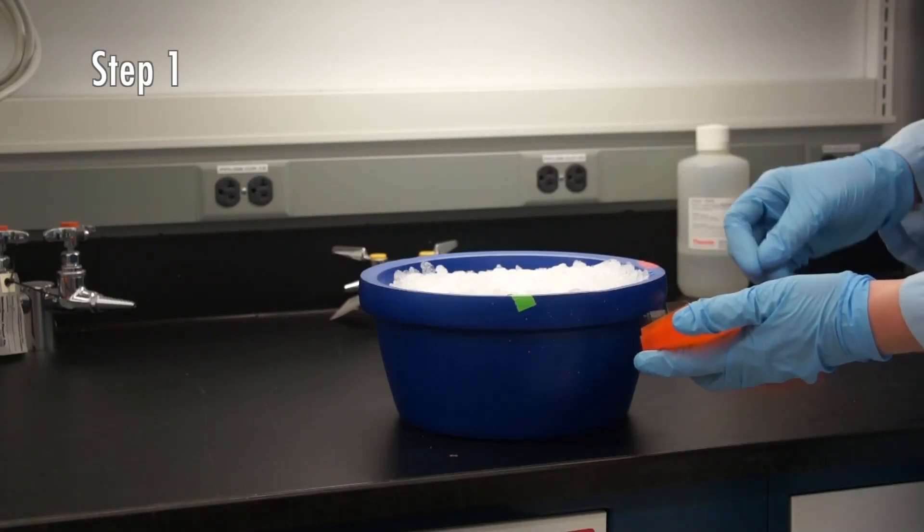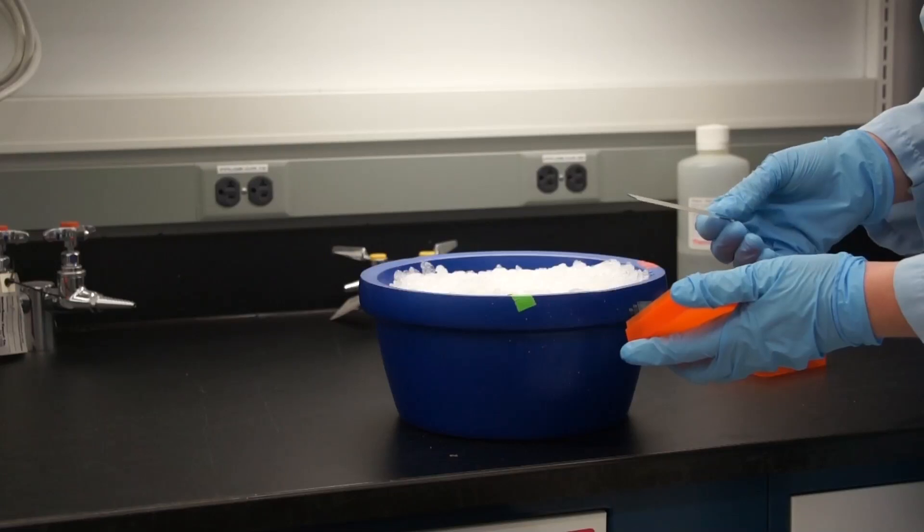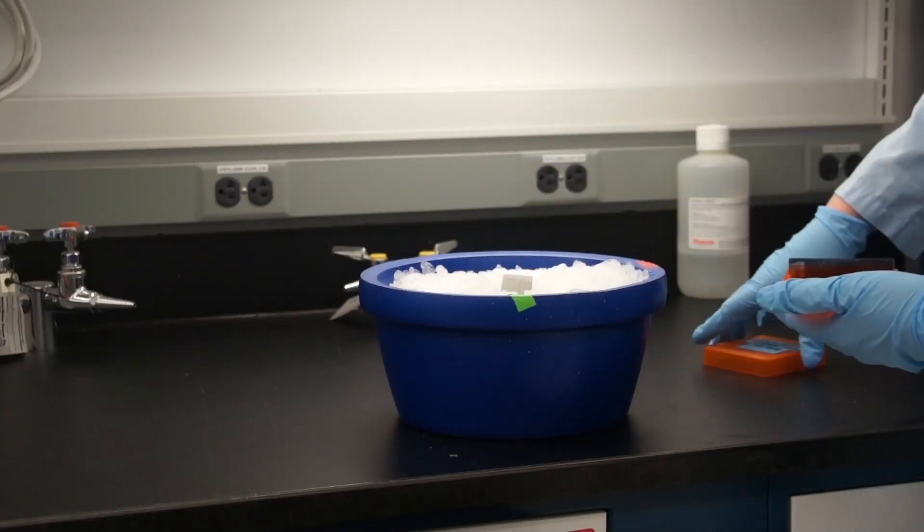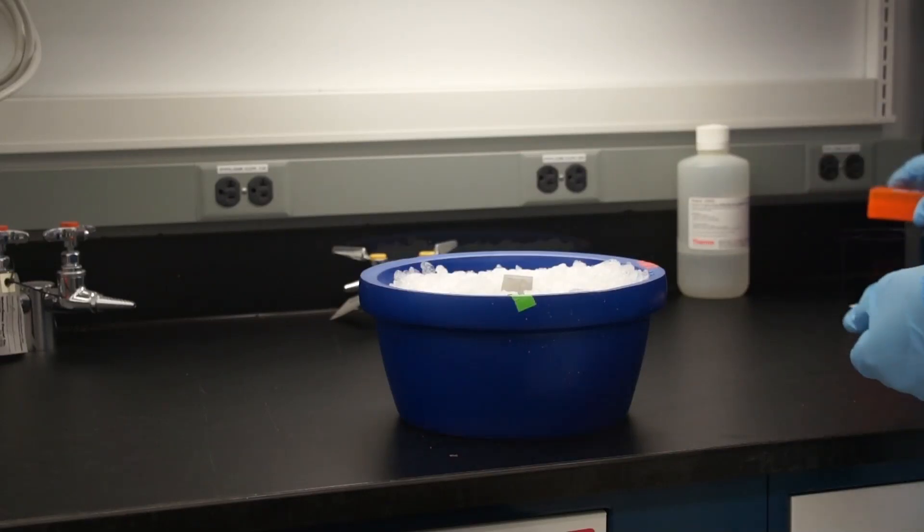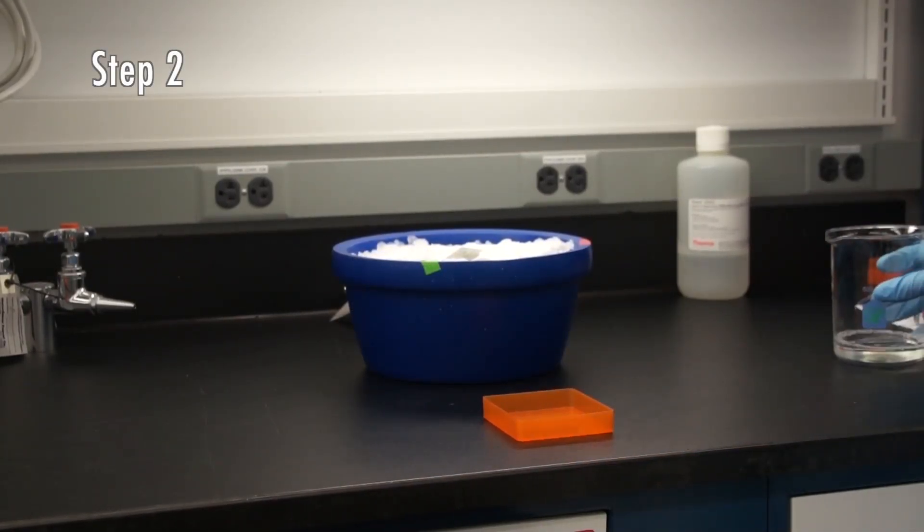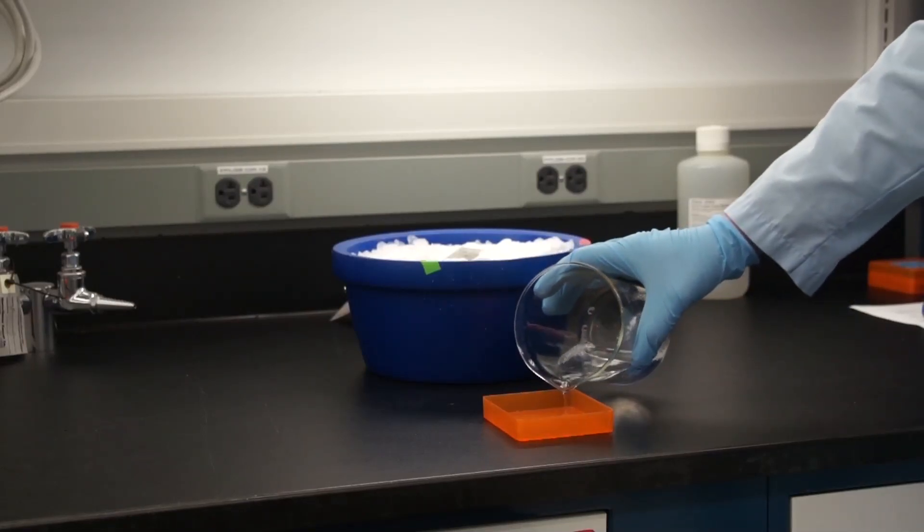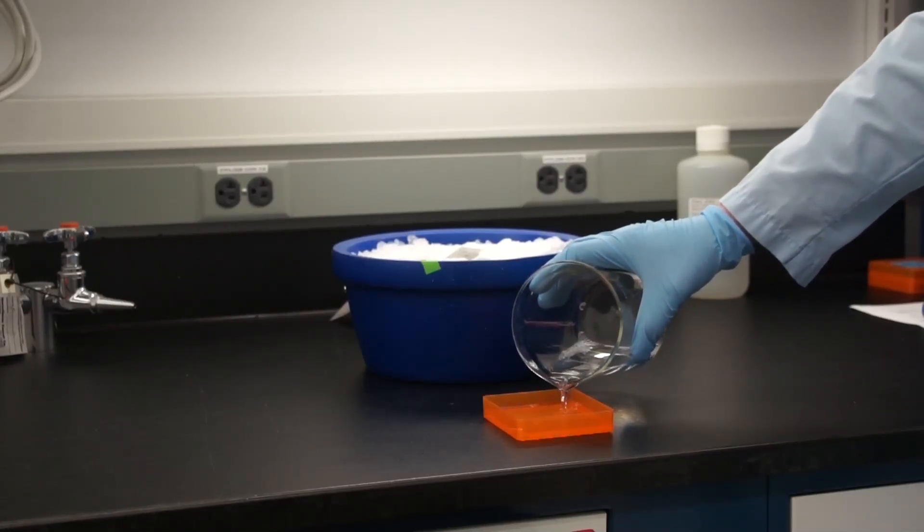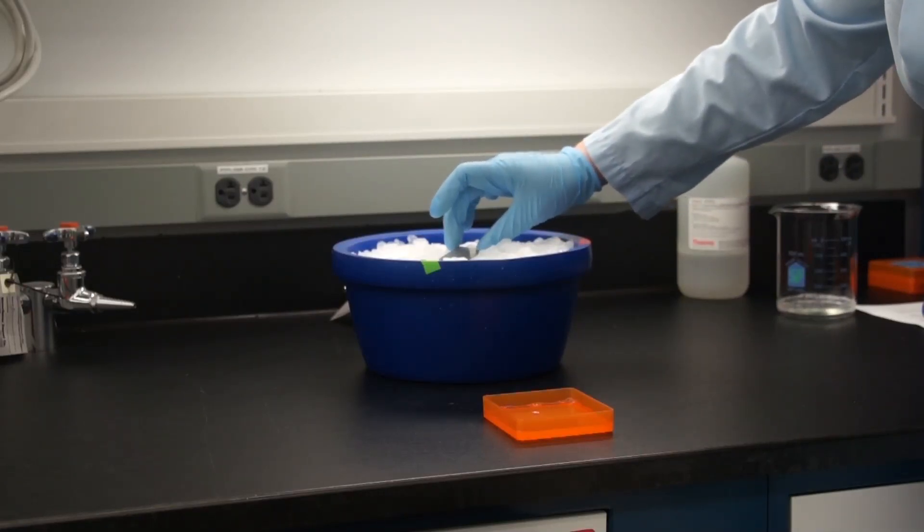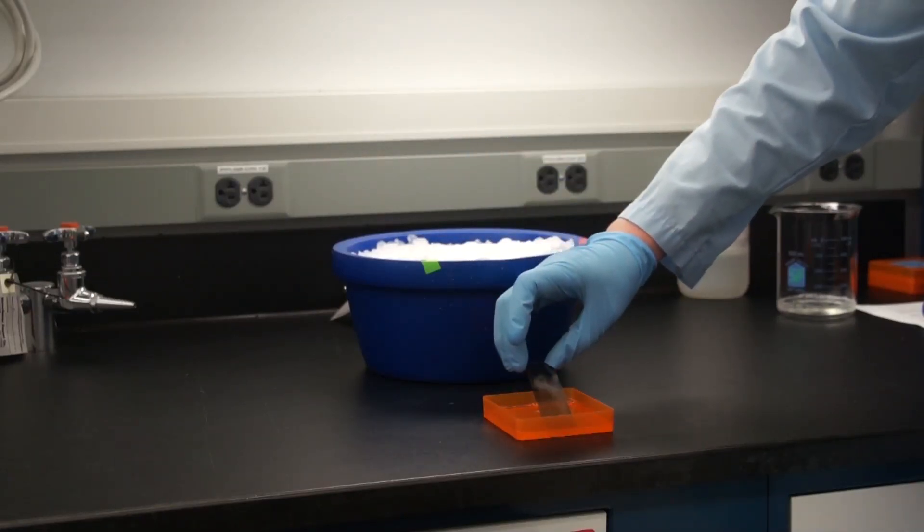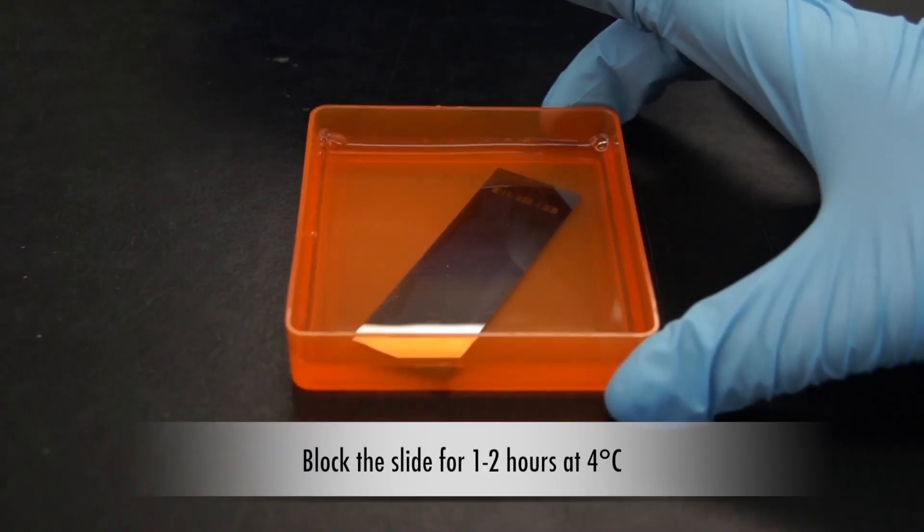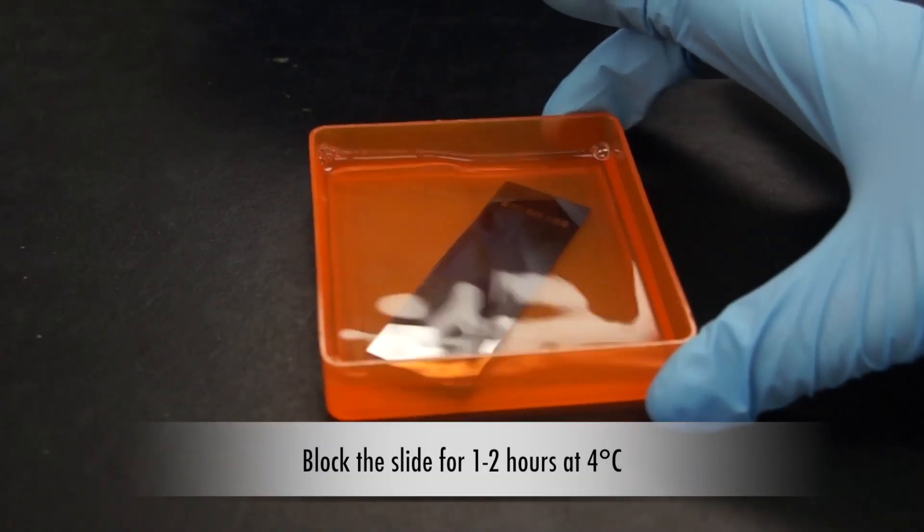We'll start by thawing the protein microarray on ice for 5 to 10 minutes. Next we'll pick up the slide by grasping the sides of the slide or the barcode and submerge the slide all at once in superblock buffer. Set that in the fridge and incubate for 1 to 2 hours to block the slide.